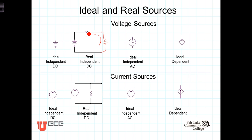The distinction between DC and AC is that DC sources provide a constant voltage over time — the voltage isn't a function of time. In an AC source, the voltage will be a function of time. It may be sinusoidal. It could be triangular. It could be a square wave or a rectangular wave. But suffice it to say that AC sources are not constant.